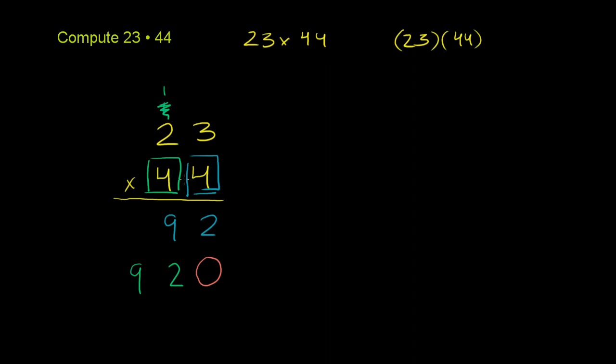it's going to be 4 times 23, which is 92, plus 40 times 23, which is 920. I just want to make sure we understand what we're doing here, so we can take their sum now.